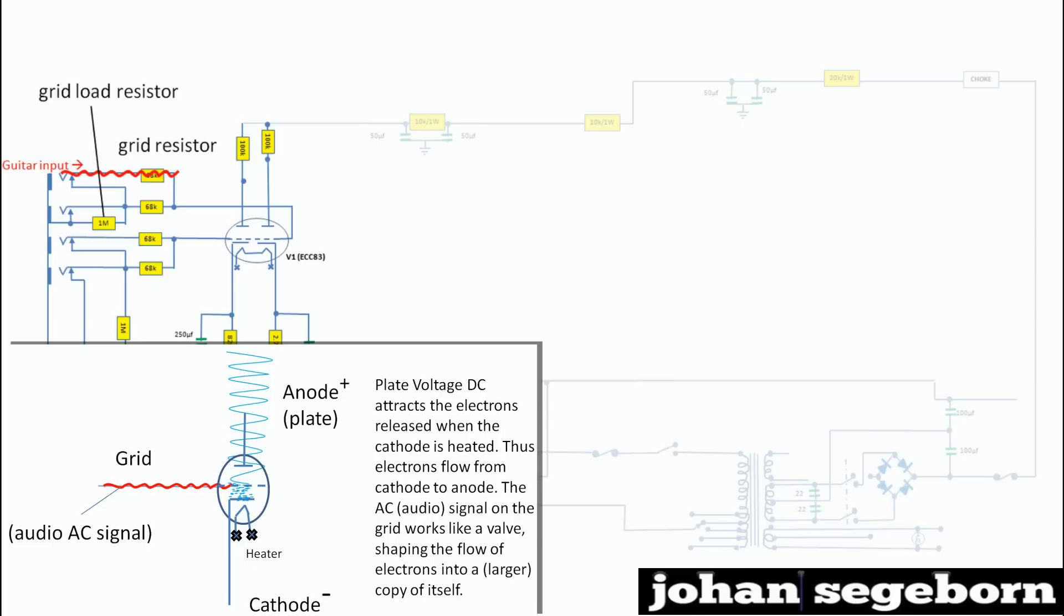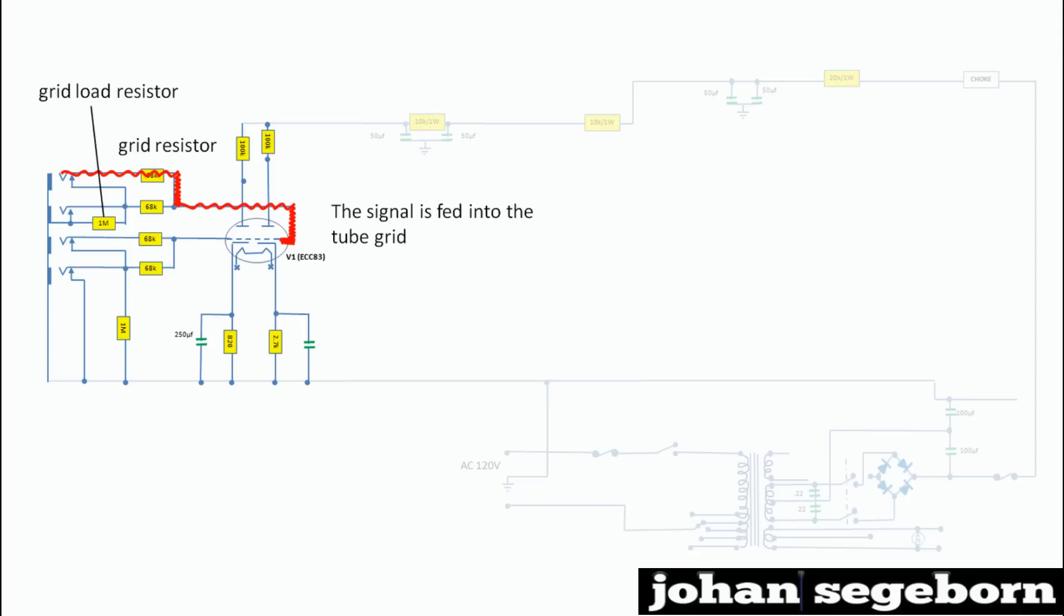It shapes the flow to mimic or copy the audio AC signal that's applied to the grid. So you get a larger copy on the plate. So the audio signal is then fed onto the grid of the first pre-amp tube. And an amplified copy is transmitted to the anode plate. And here you can see you've got a number of resistors: plate resistor, cathode resistors, and grid resistors, as we mentioned earlier. And how those are combined and set has a big influence on the gain you get out of the tube stage.